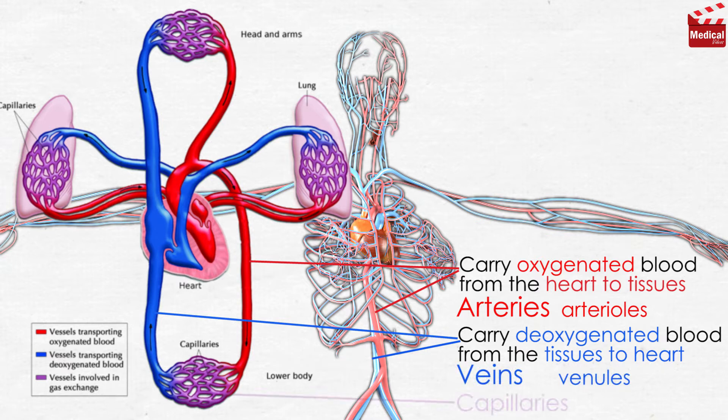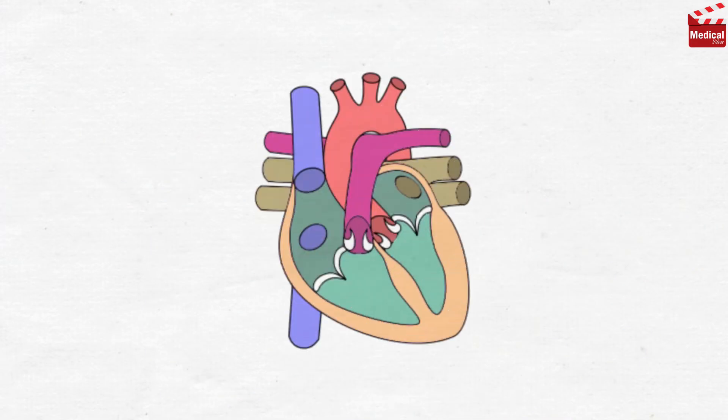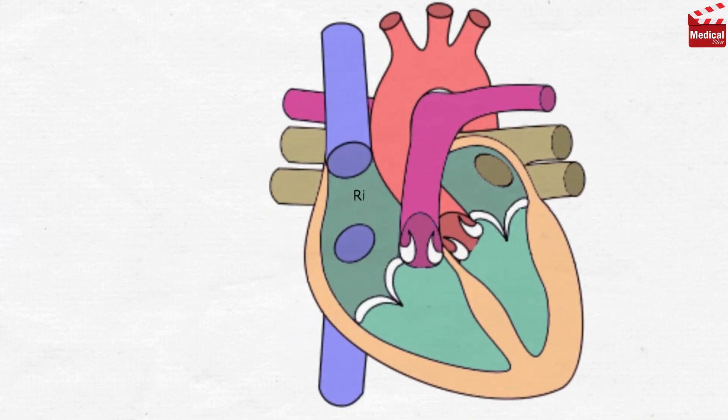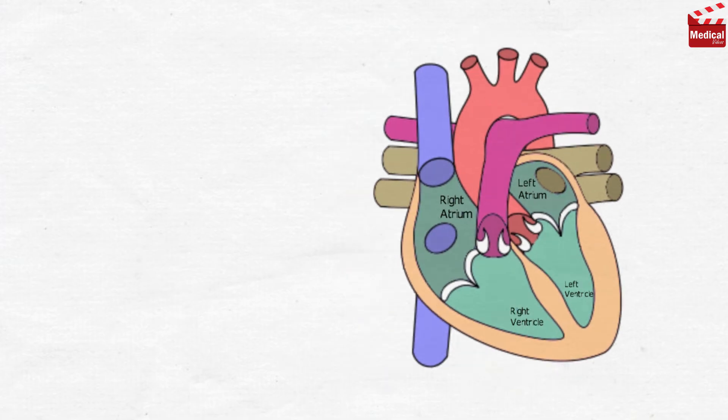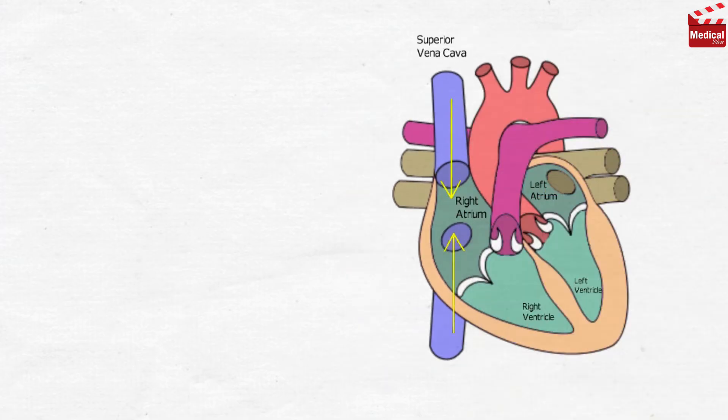And the last type that connects arterioles and venules, the capillaries. Let's use a simplified illustration. The heart is composed of 4 chambers, 2 atria and 2 ventricles. Venous blood enters the right atrium through two veins, the superior and the inferior vena cava.